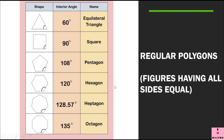Now children, these are the polygons — and they are regular polygons. Regular polygons are closed figures which are made with the help of straight lines, and all the straight lines are equal in length. This triangle is an equilateral triangle and all its sides are equal in length. The length of these three sides is equal. Also, the three angles are equal — all three angles are 60 degrees each. So this is an equilateral triangle.